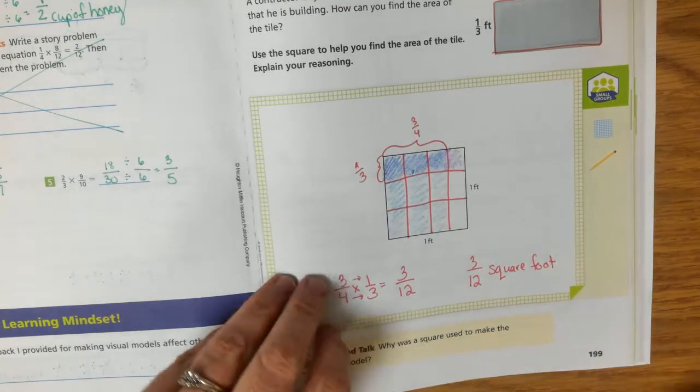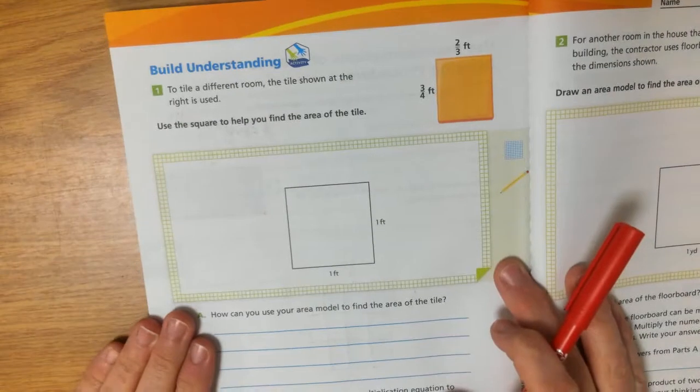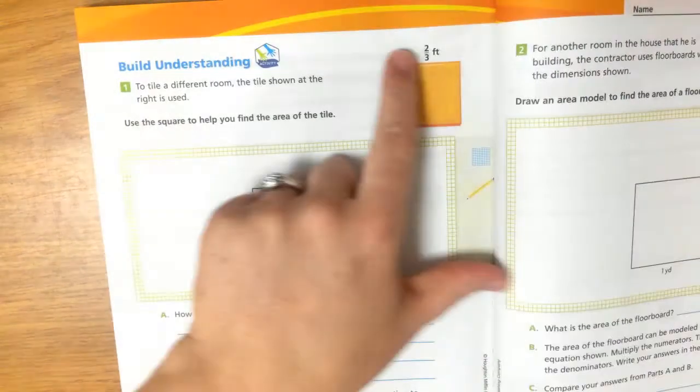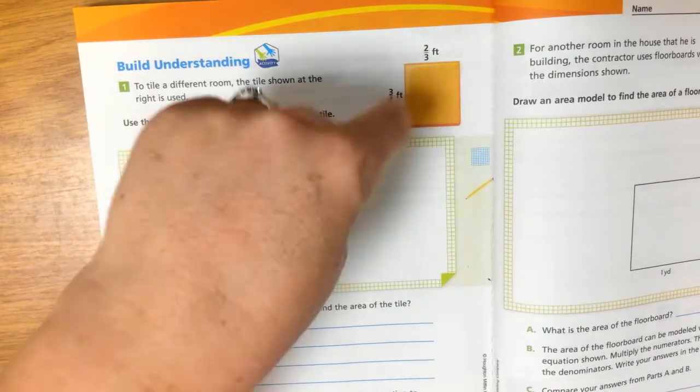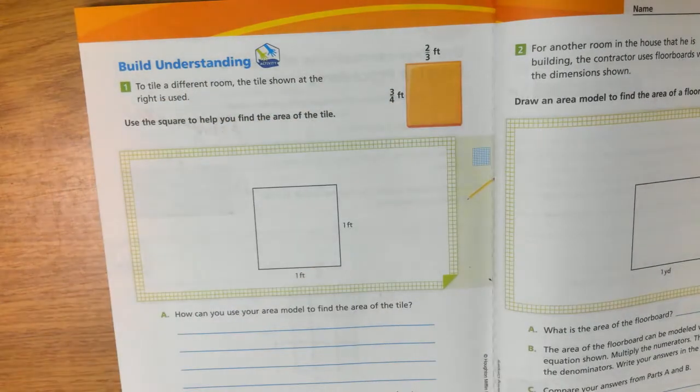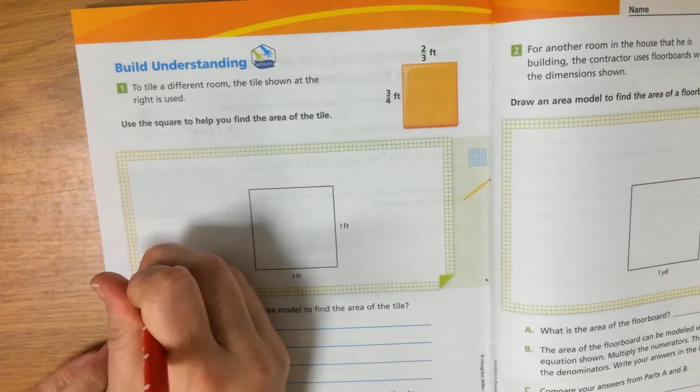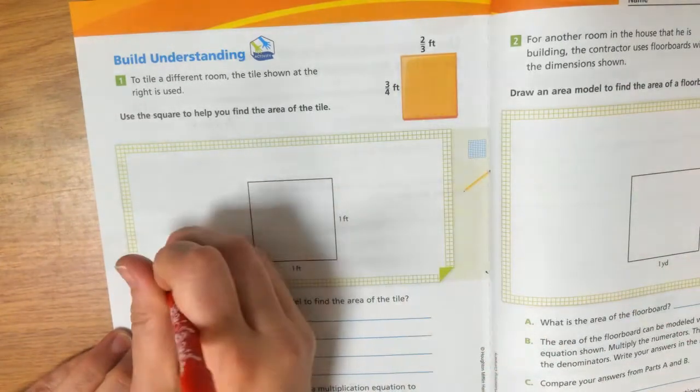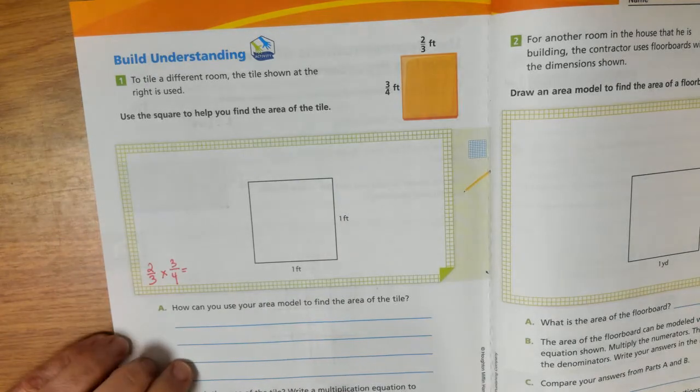Because if I need to break it up into fourths, break it up into thirds, shade in the part that represents each of the fractions, and then the part that overlaps, we can see here's where our blue and our purple overlap, these three. OK? So let's try another one. So to tile a different room, the tile shown at the right is used. So we're going to use this tile. And we want to know how many square feet just this tile is. So we can see that it is two thirds by three fourths.